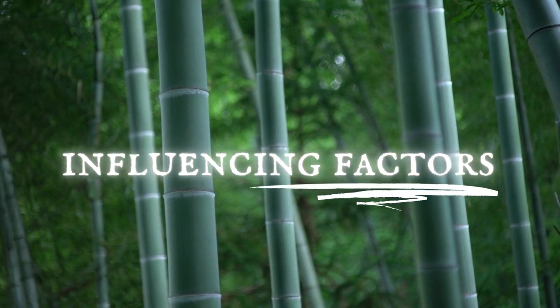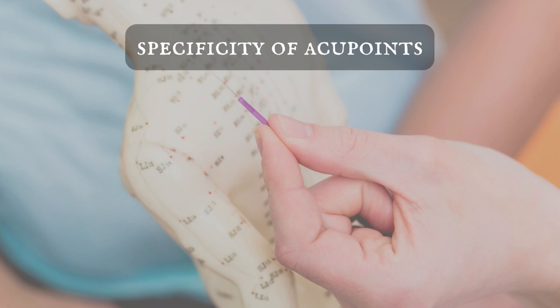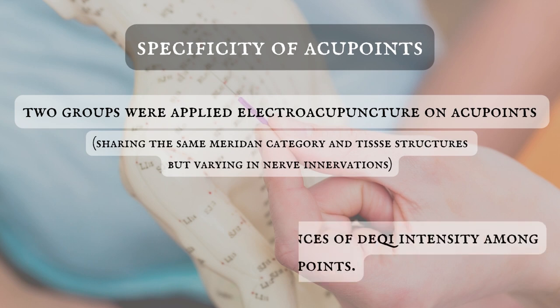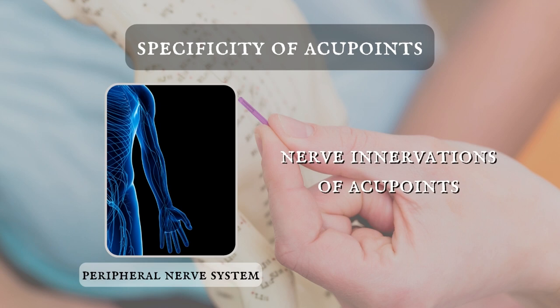Now let's discuss some influencing factors of De Qi. First of all, specificity of acupoints. A study was conducted to investigate De Qi intensity differences. Two groups were applied electroacupuncture on acupoints sharing the same meridian category and tissue structures but varying in nerve innervations. The results showed that there were significant differences in De Qi intensity among those acupoints. Therefore, nerve innervations of acupoints or the peripheral nerve system have a significant influence on De Qi.